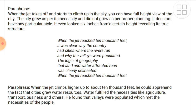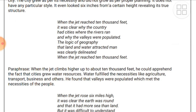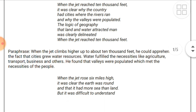In the second stanza, when the jet climbs higher to about 10,000 feet, the poet could understand why cities grew near water resources — why cities are settled along rivers. It is because near rivers there are many resources: water, agriculture, transportation, and business. Water fulfilled necessities like agriculture, transport, business, and other needs. Cities are settled near water because farming is possible, movement is easy, transportation is good, and various other activities can be carried out there.